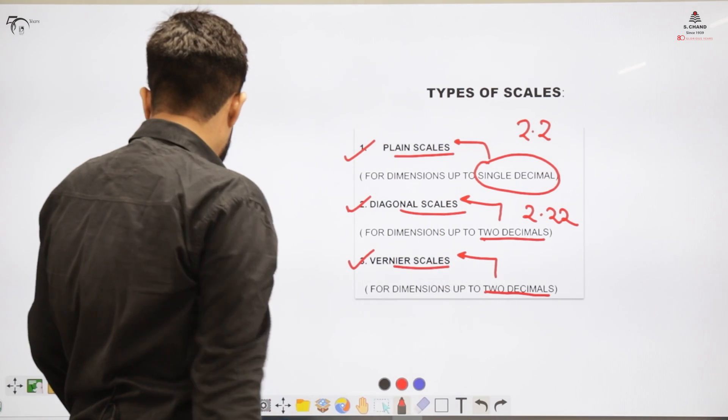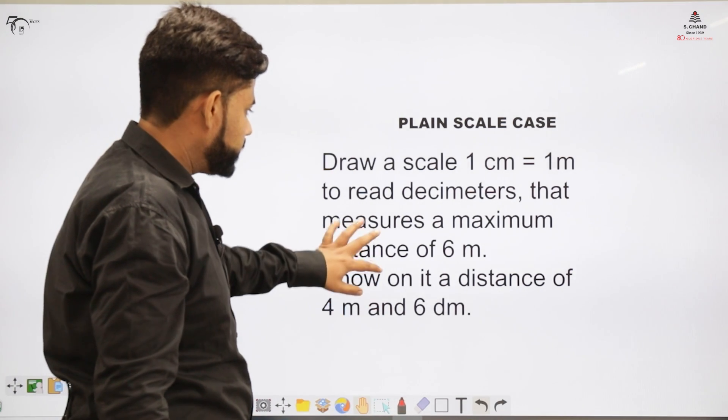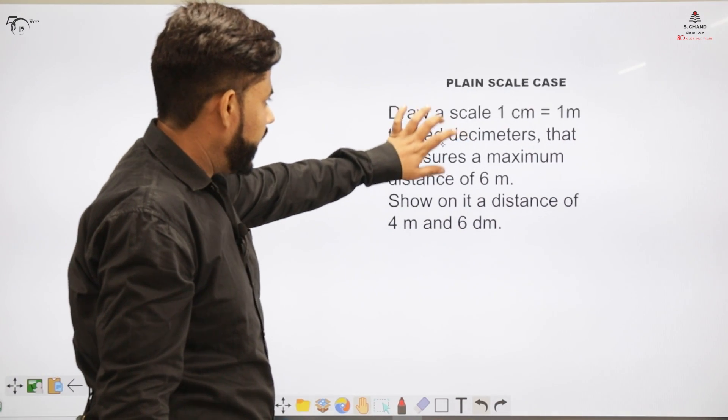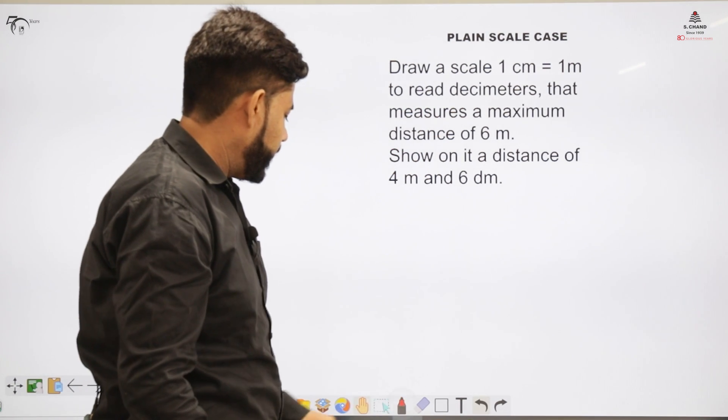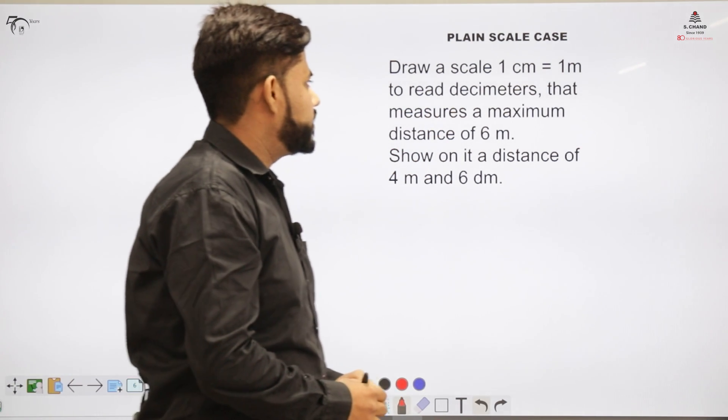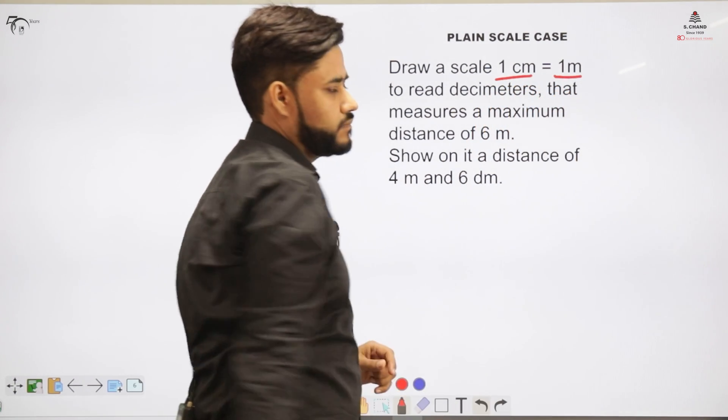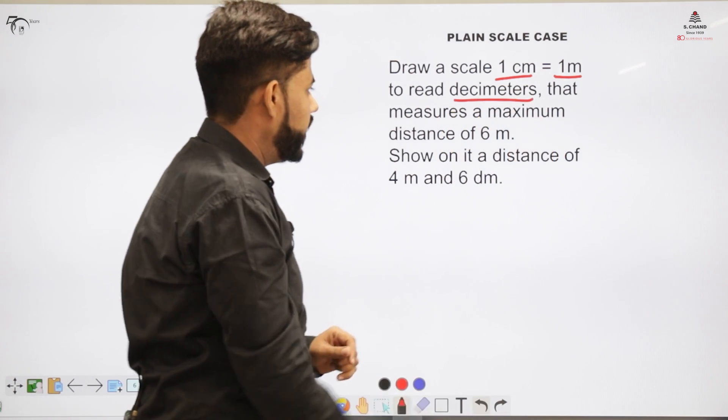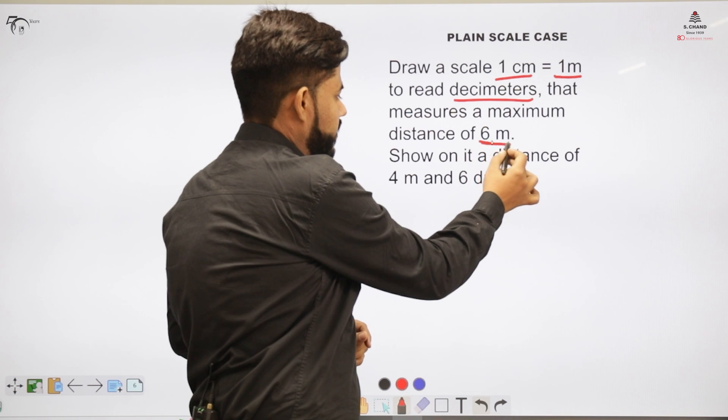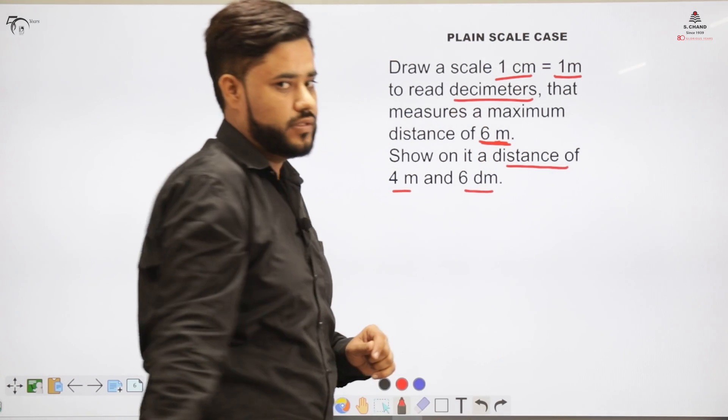Now let us understand the plane scale situation with the help of an example. So we have this example and the example says that we want to draw a scale in which 1 centimeter equals to 1 meter and that reads decimeters and it measures up to 6 meters and we want to show that distance 4 meter and 6 decimeter on the scale.